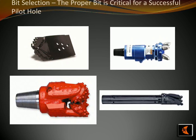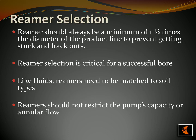Choosing the right bit for drilling a pilot hole is essential for successful construction. It is important to pick a bit suitable for the material, able to penetrate the rock to the desired depth without damaging the bit or producing a lot of dust. Additionally, it should create good mixing in the hole, which will increase the effectiveness of the pilot hole. When mining bentonite, it is essential to use the right reamer for efficient and successful operations. Consider the type of soil and product line diameter when selecting a reamer. The reamer should be at least one and a half times the diameter of the product line to prevent getting stuck or experiencing frack outs. Make sure the reamer does not constrict the pump's capacity or annular flow.